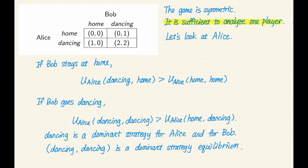Let's look at how Alice wants to play the game given a particular strategy for Bob. So Bob has two possible actions. One is to stay at home. And the other one is to go dancing.